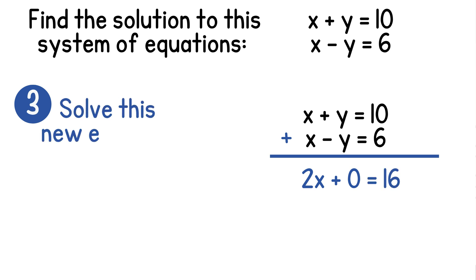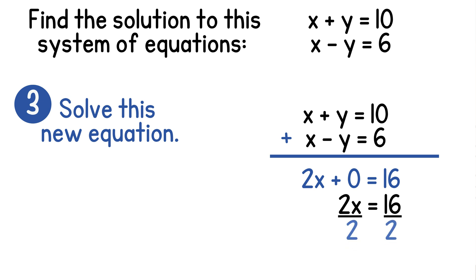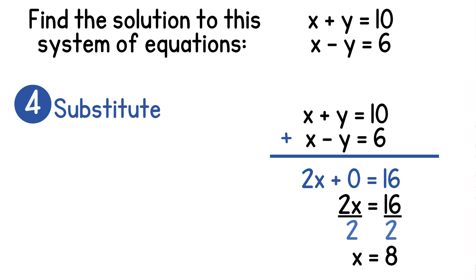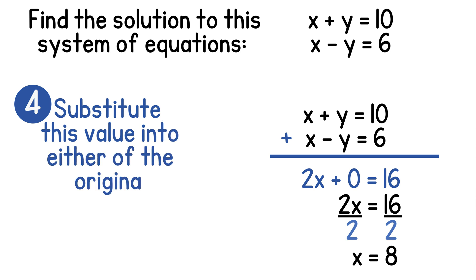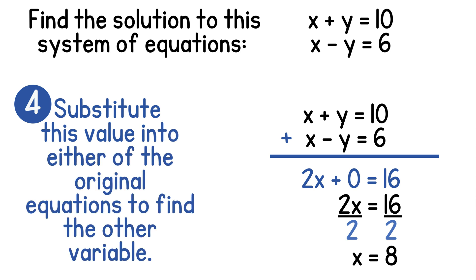Our third step is to now solve this new equation. Simplifying by adding 2x and 0 just gives us 2x is equal to 16. We can isolate x by dividing both sides by 2. This gives us x equals 8. So now we have one of our solutions. We can find the other solution by substituting this value into either one of our original equations from the system.